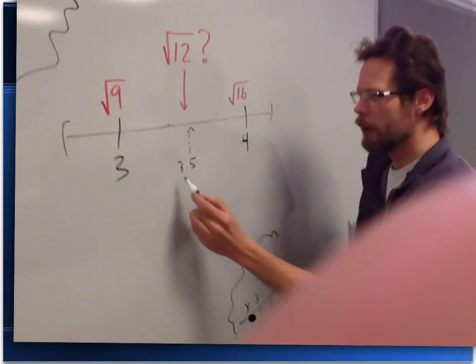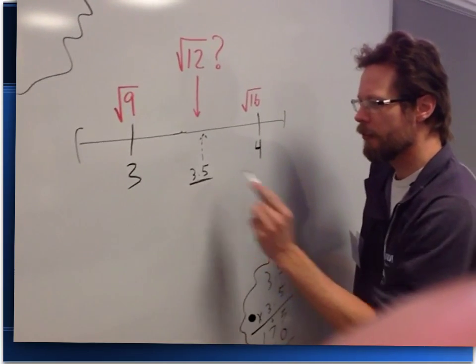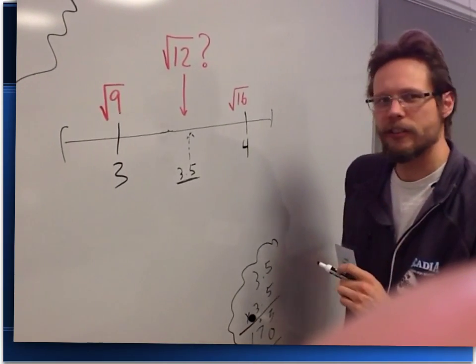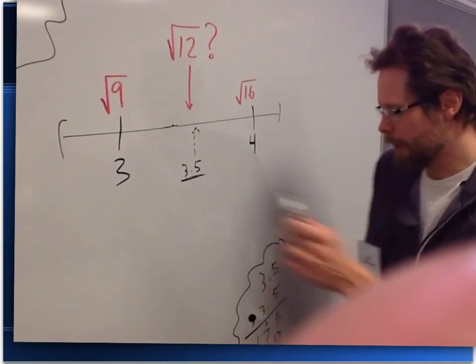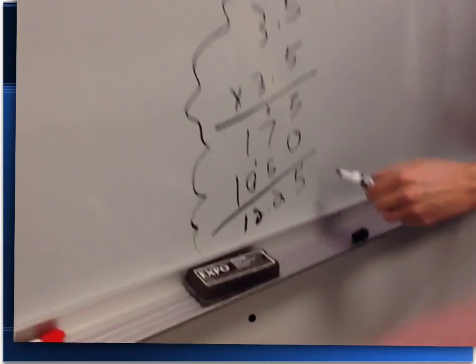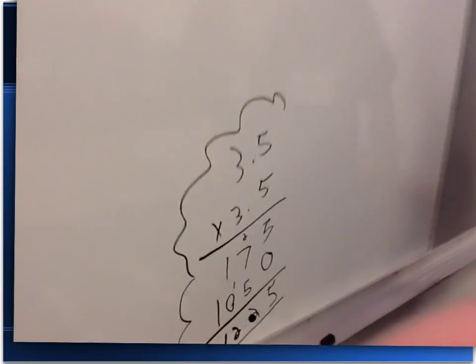Yes, we can. We start by looking at our guess of 3.5, and if we were to square that, we see what would it actually be. We have to do some arithmetic, it's already done for us. We see what we get is 12.25.